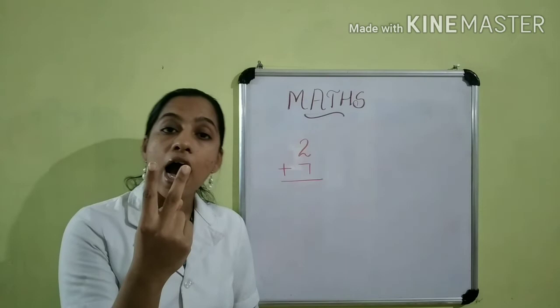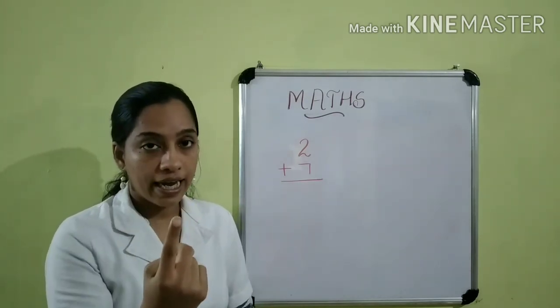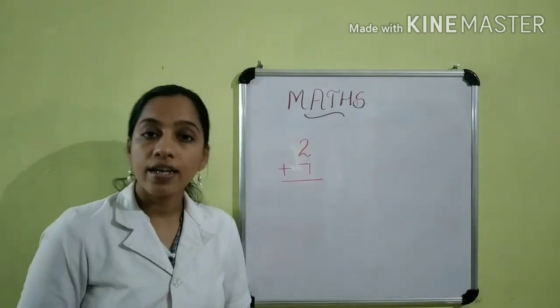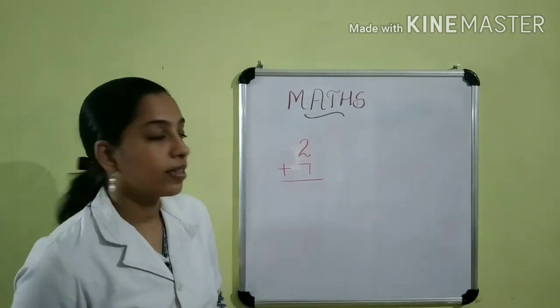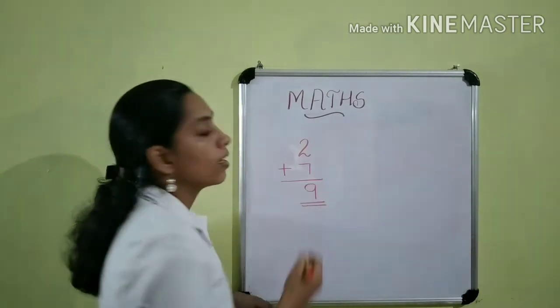So, we can keep the number seven in your mind and take the number two in your hand. Then, count after seven. That is eight, nine. So, we will get the answer nine. So, we can write the answer as nine.